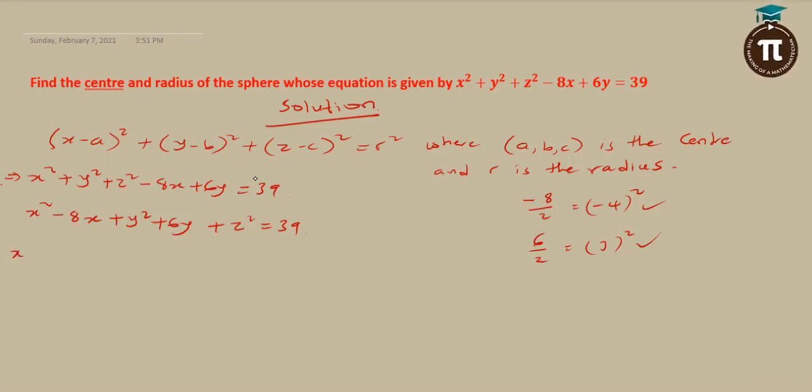This will become x squared minus 8x, add minus 4 all squared. What you do to the left-hand side of an equation, you do to the right-hand side. Plus y squared plus 6y, add 3 squared as well, then plus z squared equals 39. You have added minus 4 squared, so add it here too. Minus 4 squared plus 3 squared.